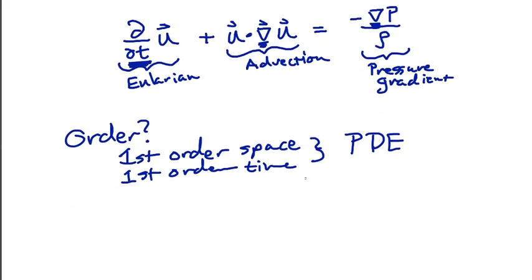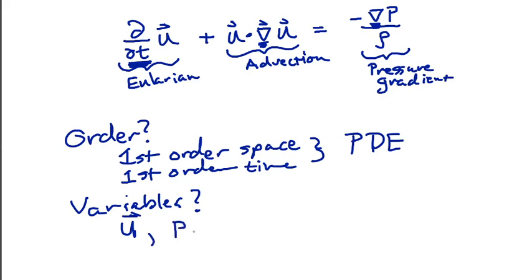So we have our first-order PDE here, and I want to ask the next question: how many variables are there, and what are the variables of the system? Well, time is not one of the variables — it's part of the independent set, part of what sets the system we're in, and same with the spatial locations. So the dependent variables here are u, the pressure p, and the density rho. Now u is a vector — it has values at different points in space and time, but it also points in a direction.